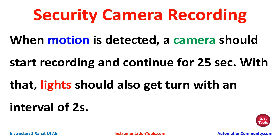There is a sensor which detects the presence of someone — it detects motion. When motion is detected, the camera turns on and starts recording for 25 seconds. The light will blink with an interval of 2 seconds: it will turn on for 2 seconds, turn off for 2 seconds, then turn on again and repeat.